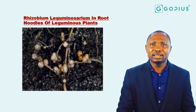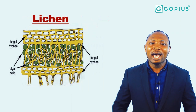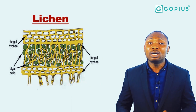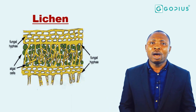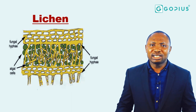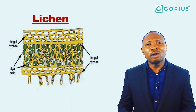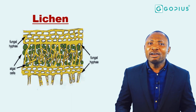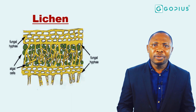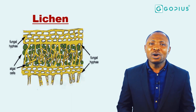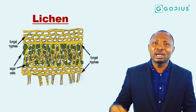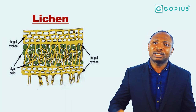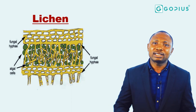The next example is lichen, which is an association between fungi and algae. The algae provides food — carbohydrates — for the fungi. The fungi has very long hyphae which it can use to penetrate the roots of soils, which the algae cannot do. The fungi supplies water and soil minerals to the algae and also prevents the algae from drying up, serving as protection. So the algae gains protection, soil nutrients, and water, while the fungi gains food from the algae.